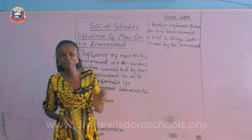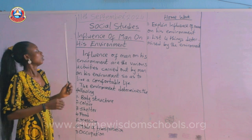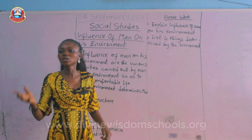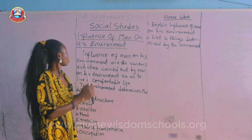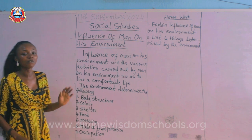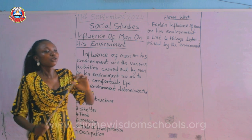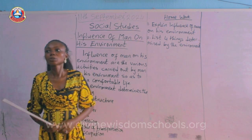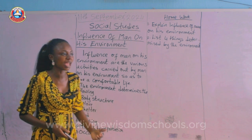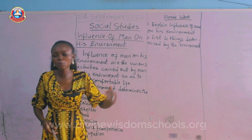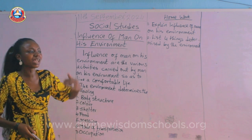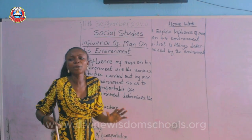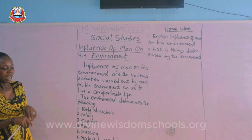So when we talk about man, we mean both females and males alike. The influence of man on his environment refers to the various activities carried out by man so as to live a comfortable life. Man has come up with different ideas on how to create things out of the natural resources around him.